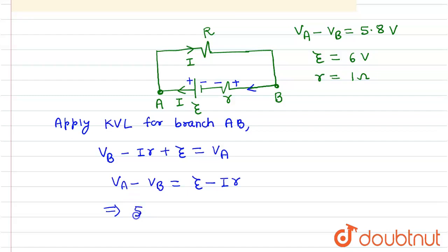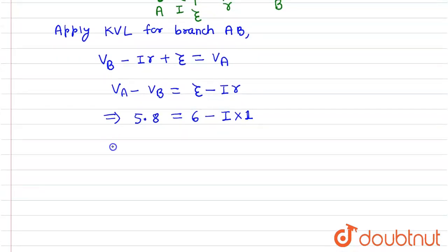So VA minus VB is 5.8 volt, emf is 6 volt minus I into r is 1. Now it will be I equals 6 minus 5.8, so this will be 0.2 ampere. So the current flowing through the cell is 0.2 ampere.